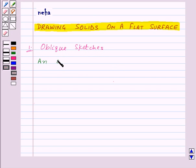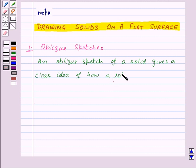An oblique sketch of a solid gives a clear idea of how a solid looks like.